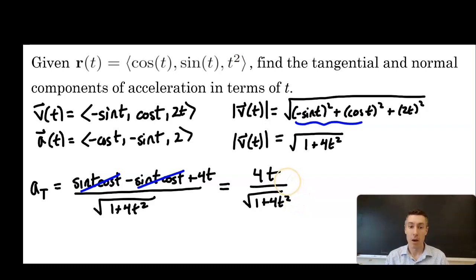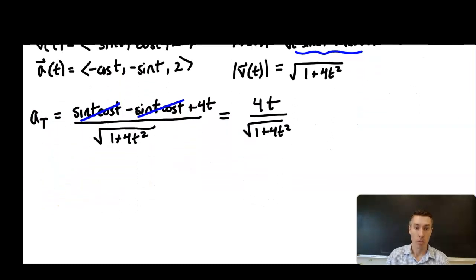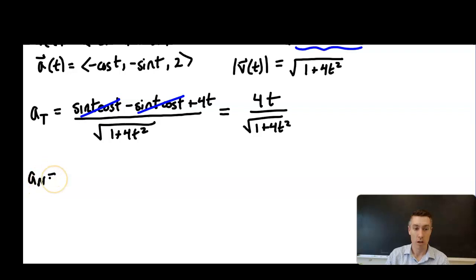This gives us a function in terms of t that we can use to find the tangential component of acceleration at any point along the curve — there are benefits to finding this because now at any point we can compute it quite easily.